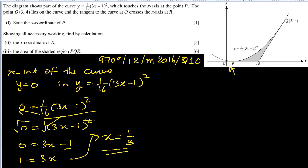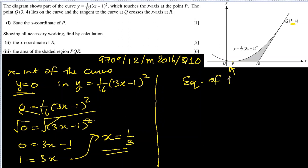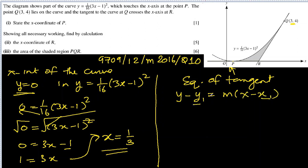So the x-coordinate of P is 1/3. For part two, we need to find the x-coordinate of R. R lies on the tangent which touches the curve at (3, 4). We will substitute y = 0 into the tangent equation, but first we need to find the equation of the tangent. The tangent line is y − y₁ = m(x − x₁), where (3, 4) is the point on the tangent, so x₁ = 3 and y₁ = 4.